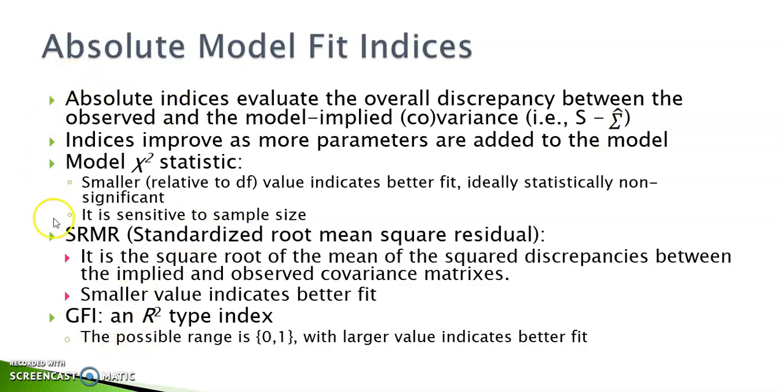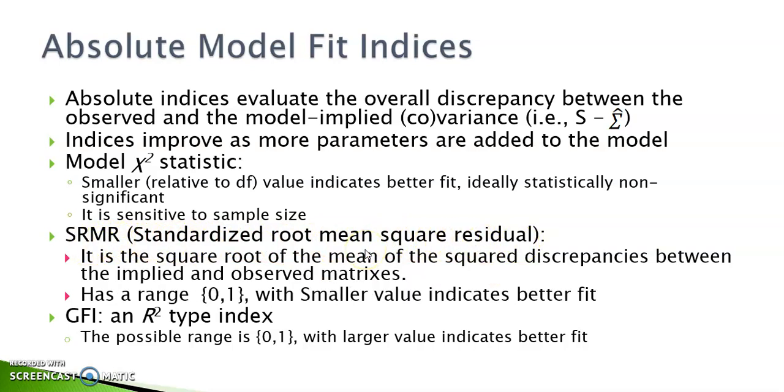The second index in this category is SRMR. It stands for standardized root mean square residual. It squares the elements in the standardized residual matrix, finds their mean, and takes a square root. So SRMR has a range from 0 to 1 with a smaller value to indicate better fit. GFI, the goodness of fit index, is an R-square type index. It also has a possible range from 0 to 1 with larger values, a value close to 1, indicating better fit.